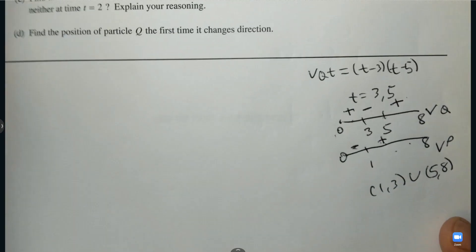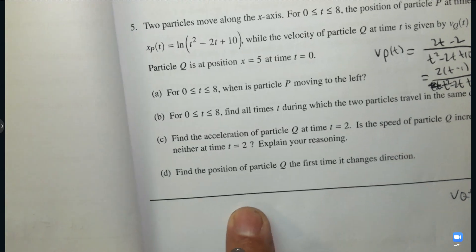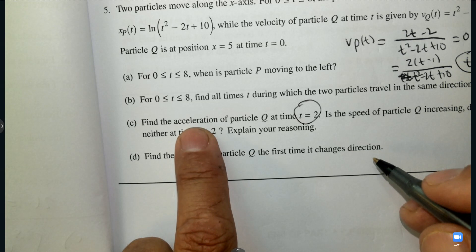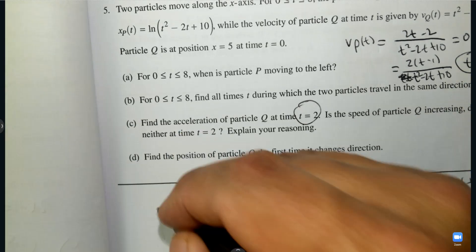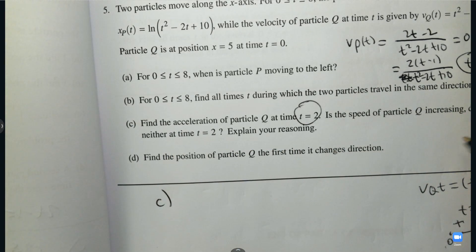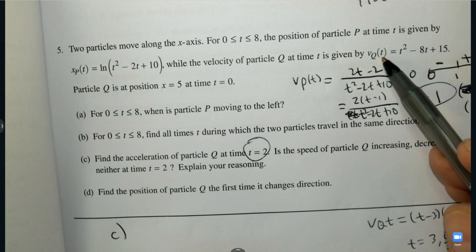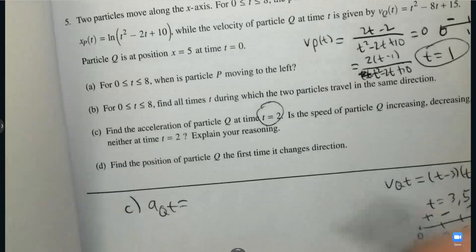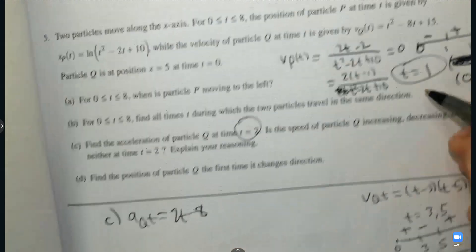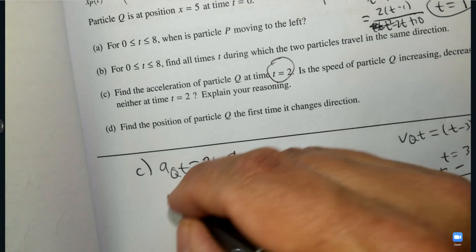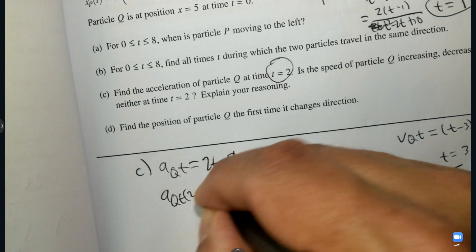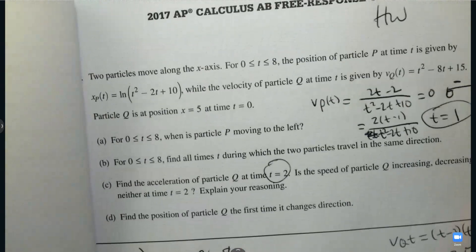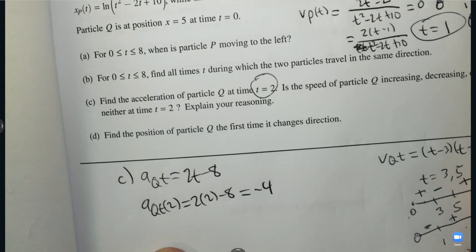Part C. Find the acceleration of the particle at Q when T equals 2. So acceleration is the derivative. So I'm going to do that right here. What's the derivative of the velocity for Q? So here it is, the derivative. So I'm going to call that acceleration. I'm going to take the derivative, 2T minus 8, and then I'm going to plug in 2. I don't have to, but I do. So it's negative. And there's no units, are there? So the answer is just negative 4.